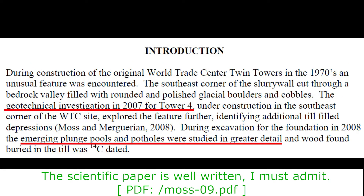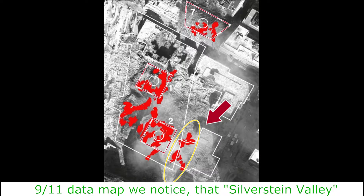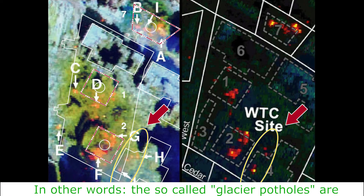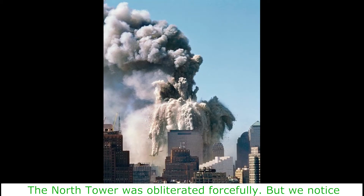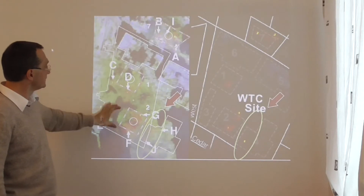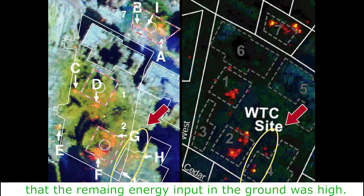The scientific paper is well written, I must admit. However, if we have a look at the infrared 9-11 data map, we notice that Silverstein Valley coincides neatly with a certain hotspot region. In other words, the so-called glacier potholes are identical with the hotspot zones. The North Tower was obliterated forcefully, but the remaining energy input in the ground was small. The South Tower collapsed with less energy, but the remaining energy input in the ground was high.